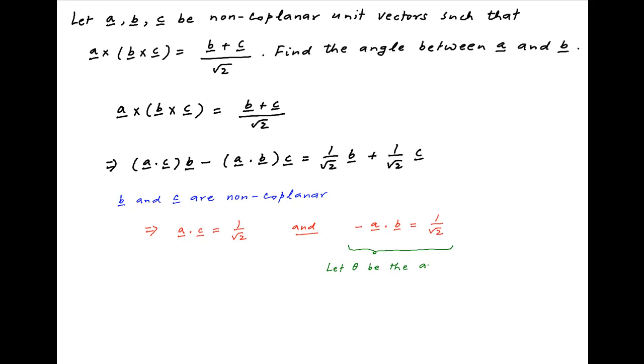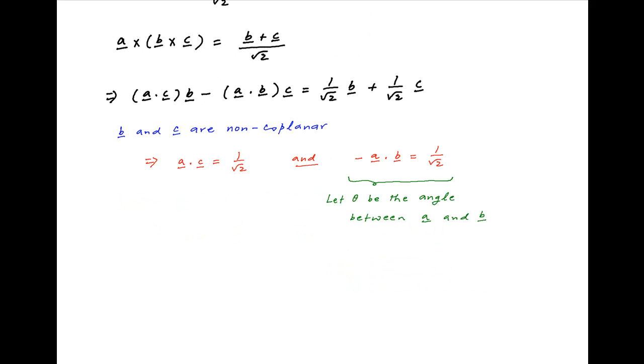Now let theta be the angle between vectors a and b. Therefore the second condition can be written as absolute value of vector a times absolute value of vector b times cos theta is equal to minus 1 upon root 2. Now absolute value of vector a and absolute value of vector b are equal to 1 because both of these vectors are given to be unit vectors.